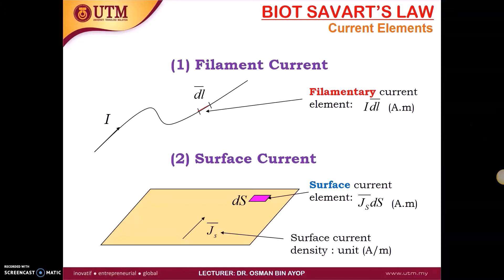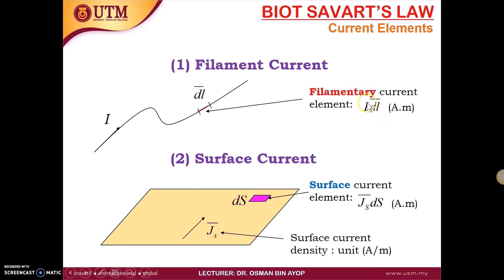The first current element is called the filament current. Basically, the filament current is like a long wire or long conductor carrying a steady current. For the filament current element, we write the current element as i·dl-bar, where i is the magnitude of the current flow and dl is the direction of the current.